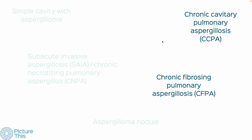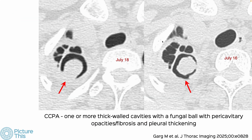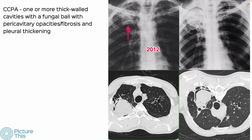There has been growing clarity in definitions. My colleague Mandeep from PGI was lead author of a paper defining CCPA as one or more thick-walled cavities with a fungal ball, pericavitary fibrosis, and opacities. You can see the pleural thickening here — this is a classic fungal ball in a post-tuberculous lung disease, or PTLD, patient.